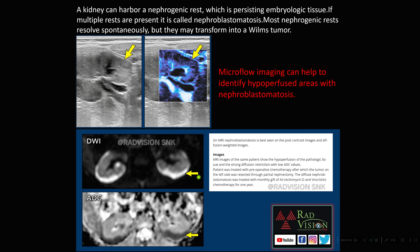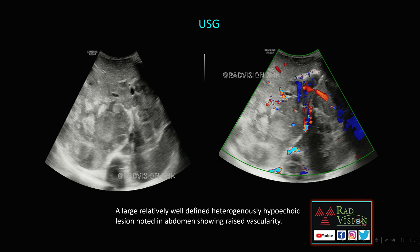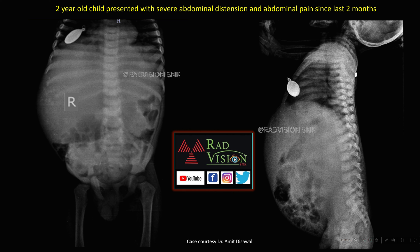This case on MRI shows typical restricted diffusion on DWI noted in a subcapsular location, with hyperperfused areas on microvascular flow imaging. This is a classical case of bilateral nephroblastomatosis. On MRI, nephroblastomatosis shows restricted diffusion with low ADC values and is a precursor for Wilms' tumor, so these cases should be closely followed.